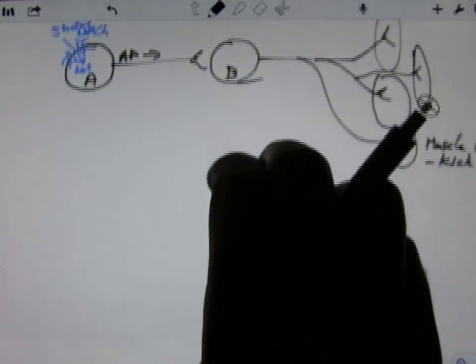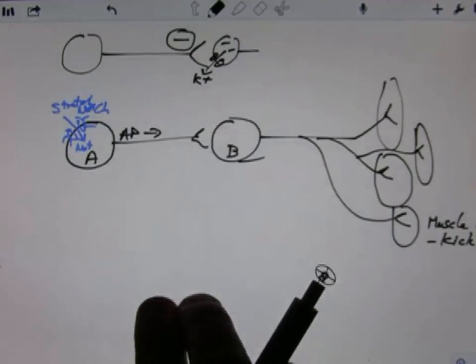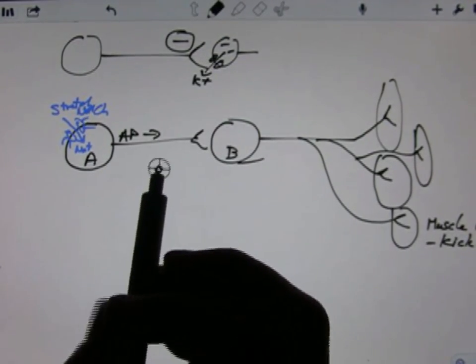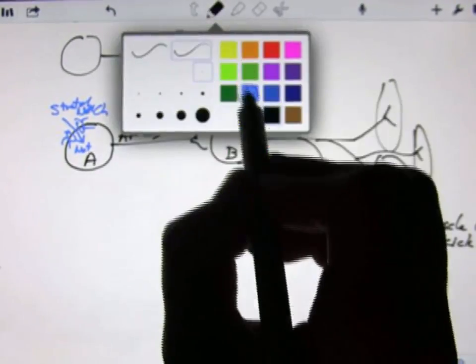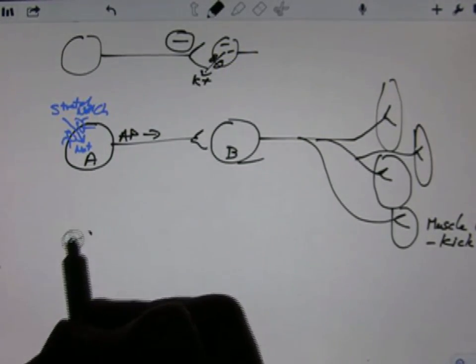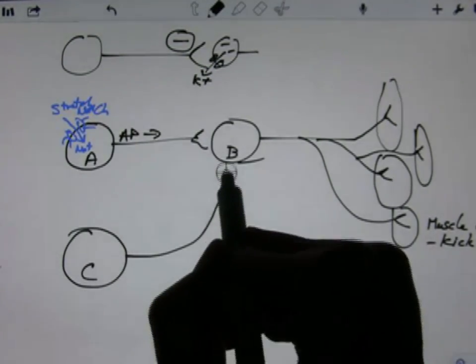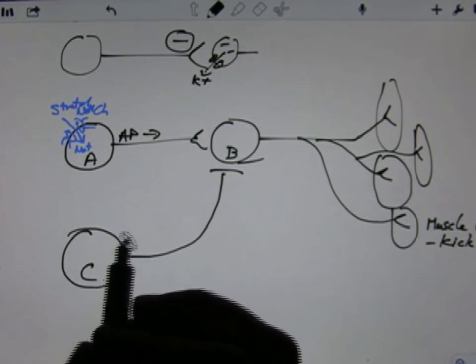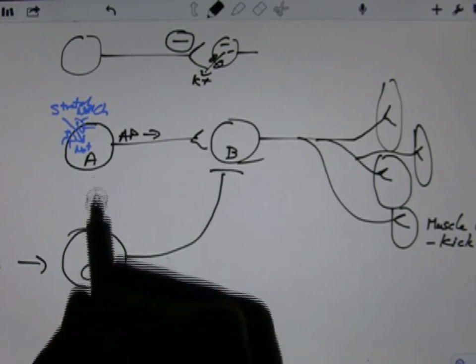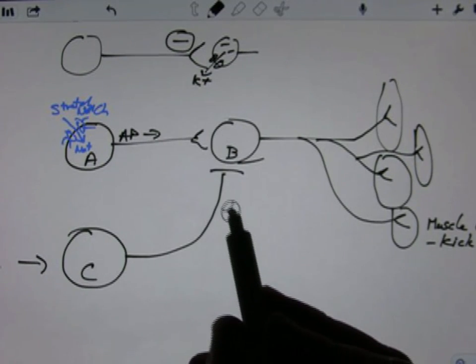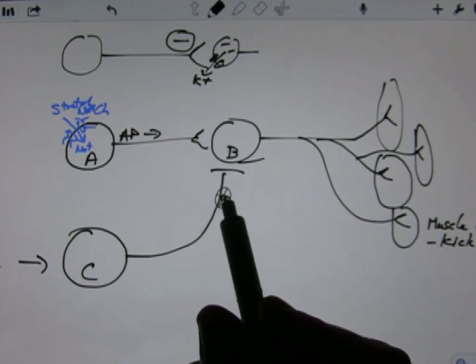You can also have inhibitory ones. So let's imagine that you were in a situation you were desperately trying to avoid kicking. You could propose an inhibitory neuron that inhibited it. And so if you had some input to here and to the stretch channel, perhaps you'd be able to inhibit or partly inhibit that knee-jerk reflex.